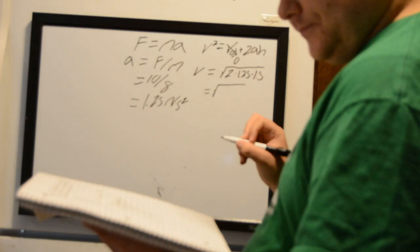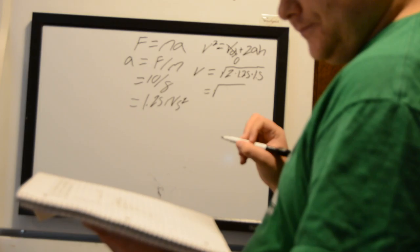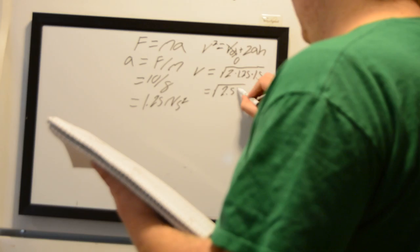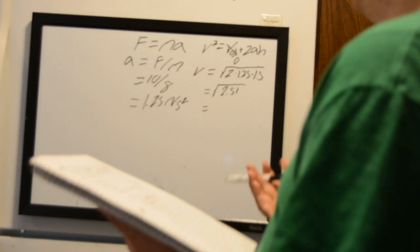So then, we multiply this all out and we find that this is the square root of 2.51 meters squared over seconds to the fourth. And then we have our square root there, which will take it down to meters per second. And that's going to be 1.6 meters per second.